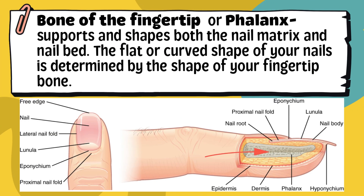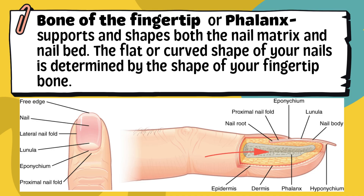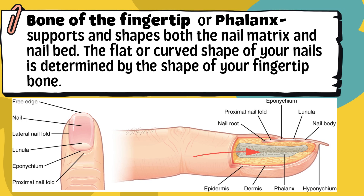Lastly, the bone of the fingertip — or phalanx — supports and shapes both the nail matrix and nail bed. The flat or curved shape of your nails is determined by the shape of your fingertip bone. This bone under your fingertip supports your nail, and its shape affects whether your nails are flat or curved.